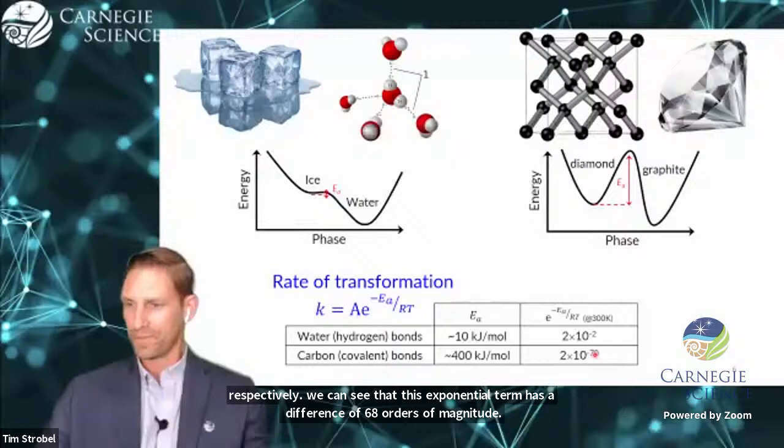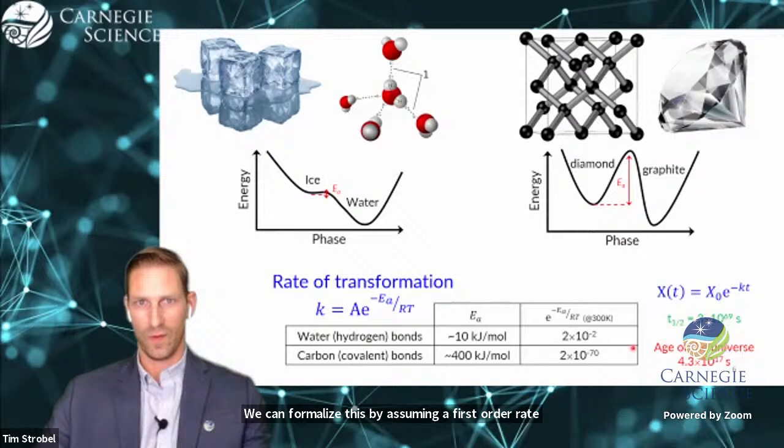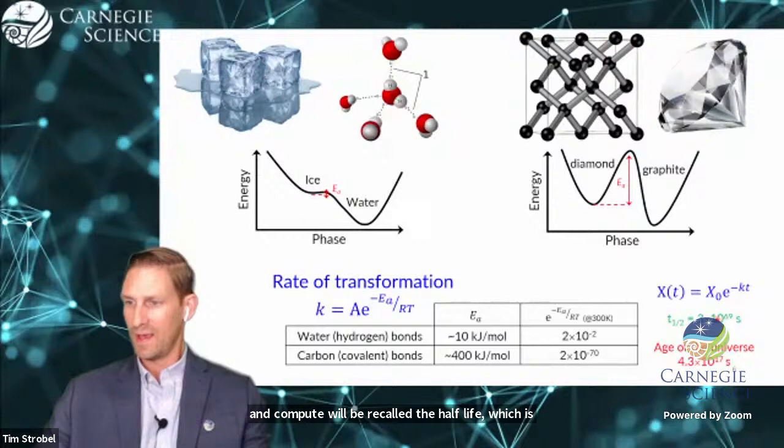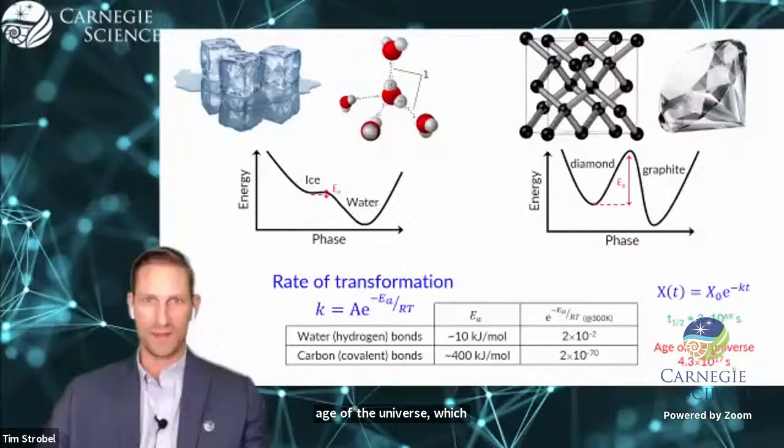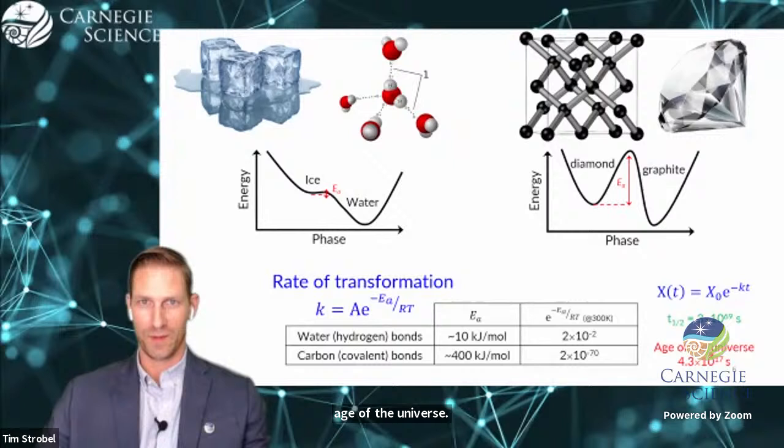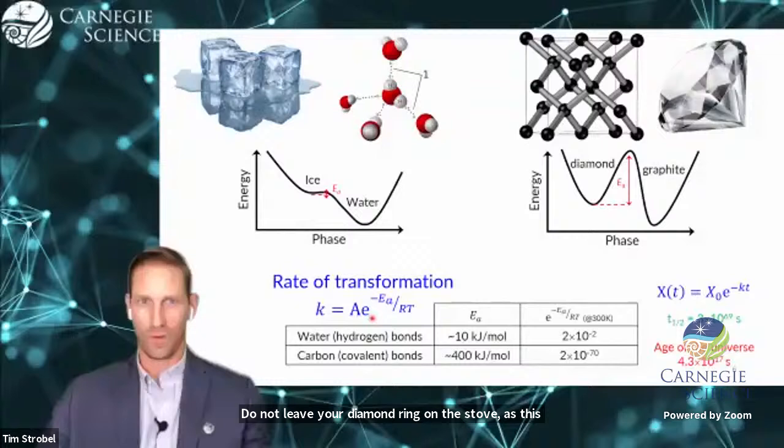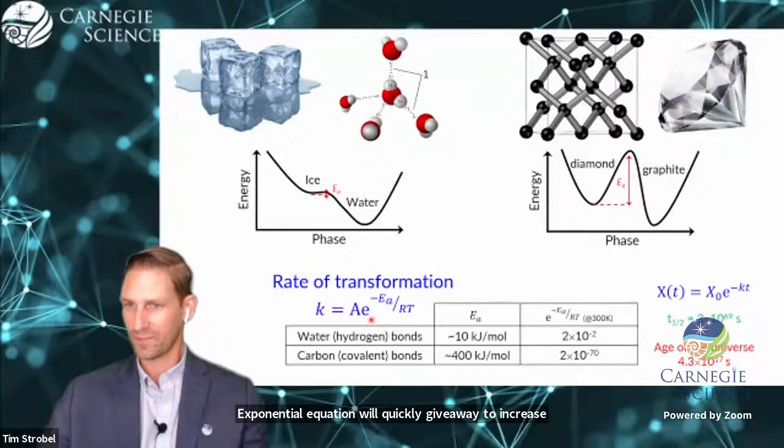We can formalize this by assuming a first order rate law and compute the half-life, which is the time that it takes for half of a substance to decompose. We can see 10 to the 69 seconds is vastly longer than the age of the universe, which explains why diamonds are so persistent. A warning, however, is that these calculations are done at room temperature. Do not leave your diamond ring on the stove.